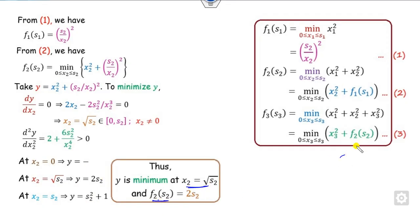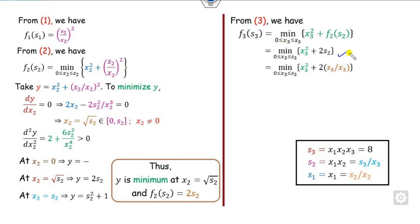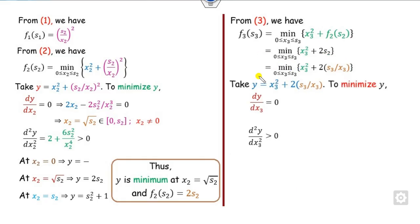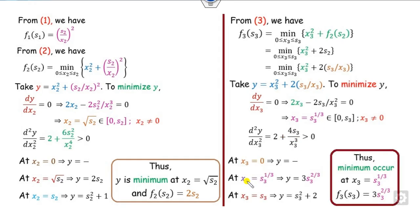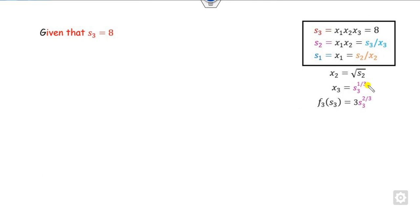Substituting this value into equation three, we get s2 as s3 divided by x3. Again, the target is to minimize. We take y equal to this expression, compute the derivatives, verify they are positive, and compute values at boundary and critical points. The minimum occurs at x3 = s3/3. So x2 is obtained from there, and x3 from here.